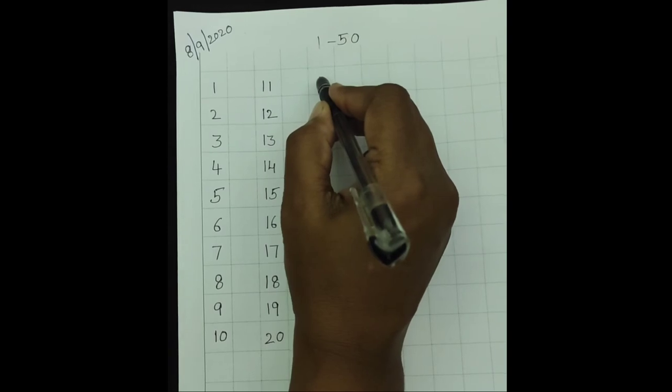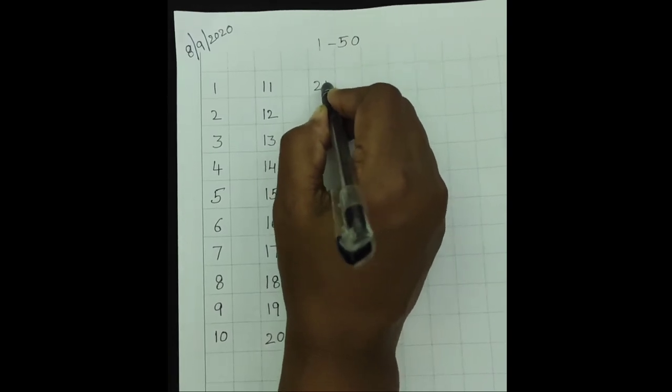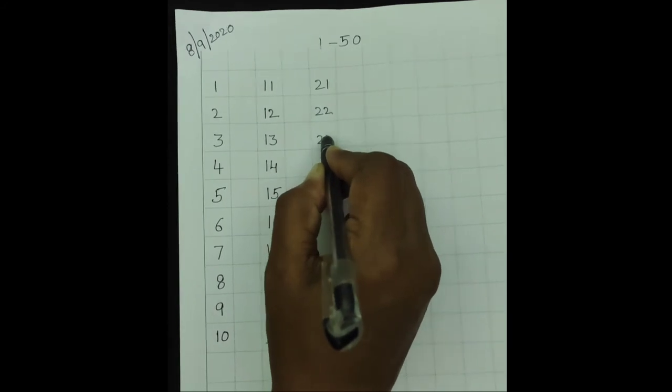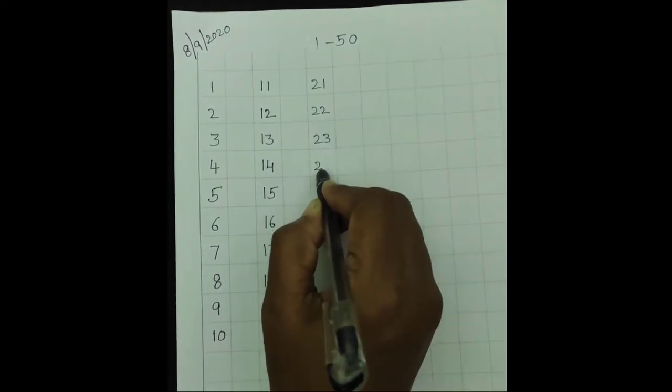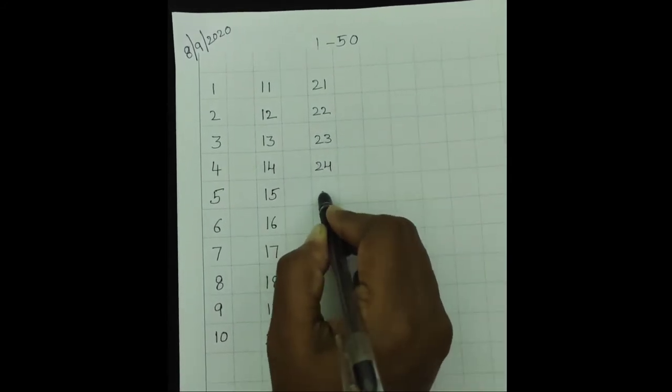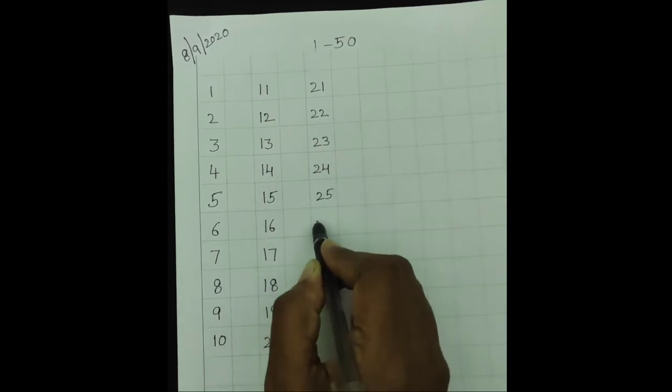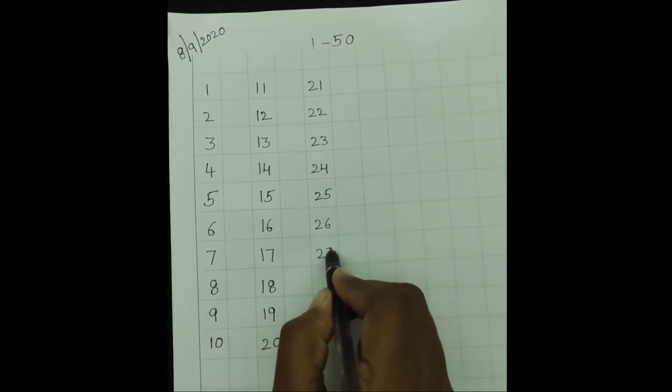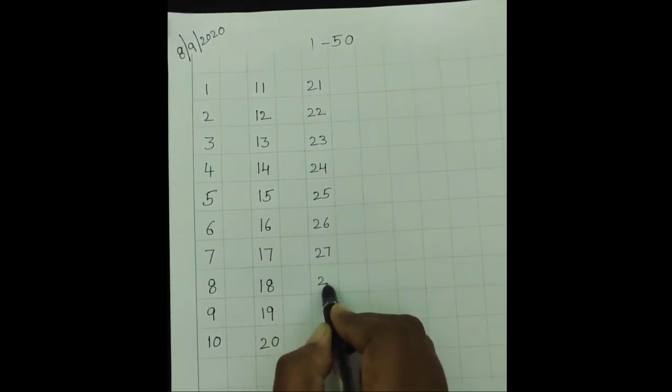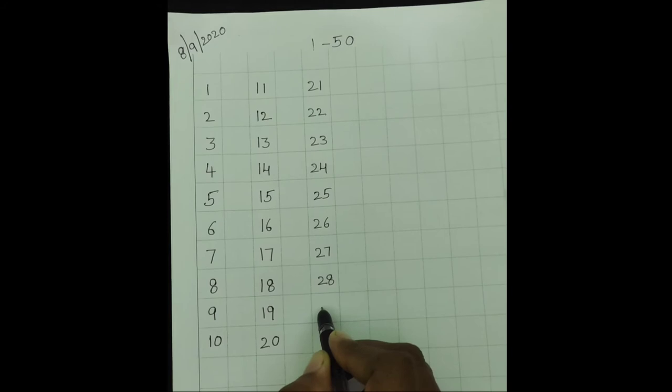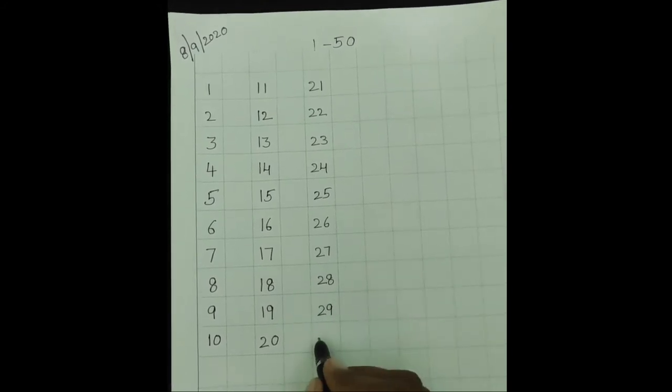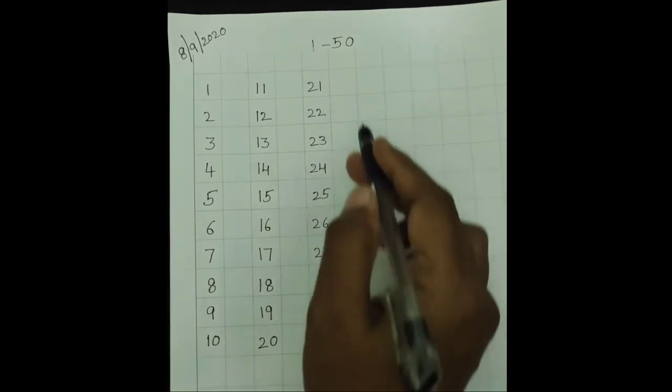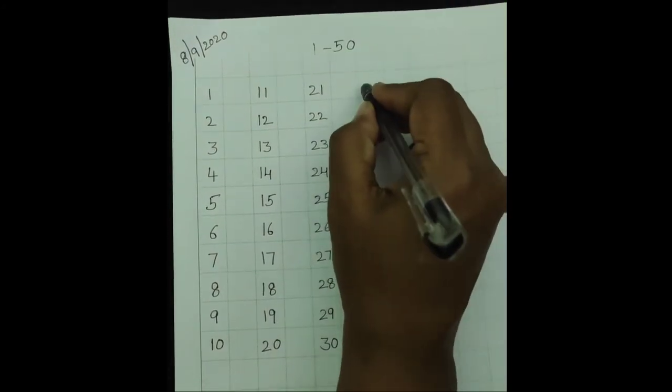Go to the next line. 2, 1, 21, 2, 2, 22, 2, 3, 23, 2, 4, 24, 2, 5, 25, 2, 6, 26, 2, 7, 27, 2, 8, 28, 2, 9, 29, 3, 0, 30. Leave one line.